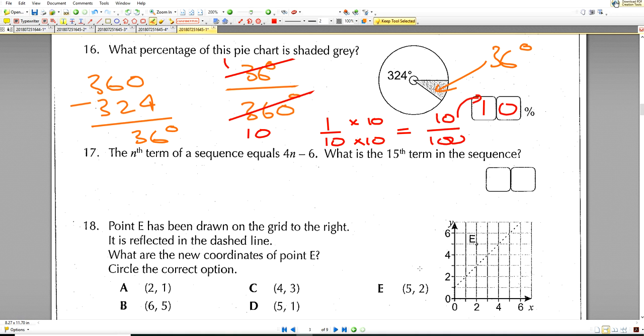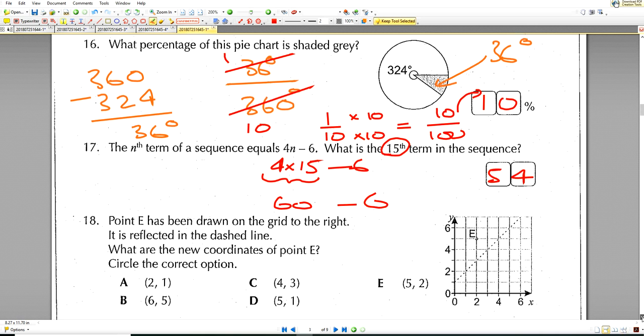The nth term of a sequence equals 4n minus 6. We look at some algebra here. Question number 17. So n is the term number, and the term number is 15. So we have 4 times by the n. n is 15. 4 times by 15, take away 6. Well, 4 times by 15 will give us 60, and then we take away the 6. That will give you 54. Question done.